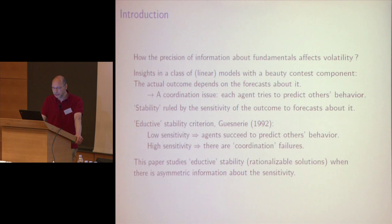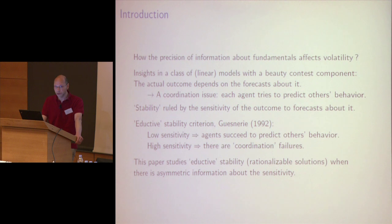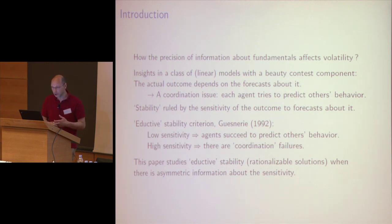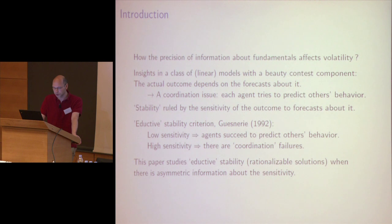Stability — it is known that in this class of model, at least since the 1930s and in textbooks this was already very clearly stated — stability is governed mainly by the sensitivity of the actual outcome to the forecasts formed about it. If one adopts the deductive stability criterion, then a low sensitivity will make coordination of expectations easier and will favor uniqueness of the rationalizable outcome. On the contrary, when there is high sensitivity of the actual state to the forecast, then there may be coordination problems.